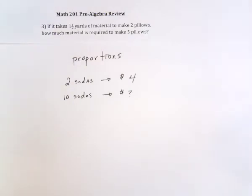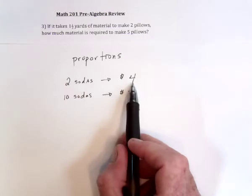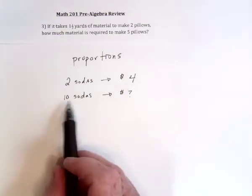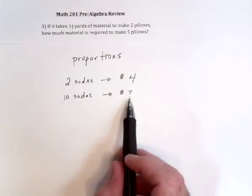There's a couple of ways that you can do that. One, you can say, well just break this down. If two sodas is four dollars, that means that they're two dollars a piece. If they're two dollars a piece and you get ten of them, that's going to be twenty bucks.